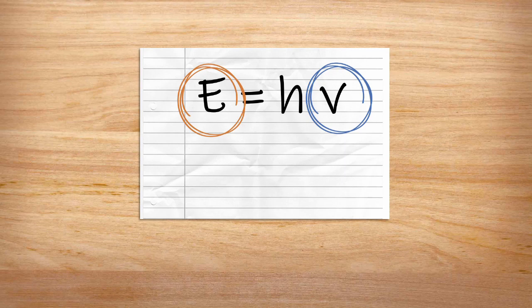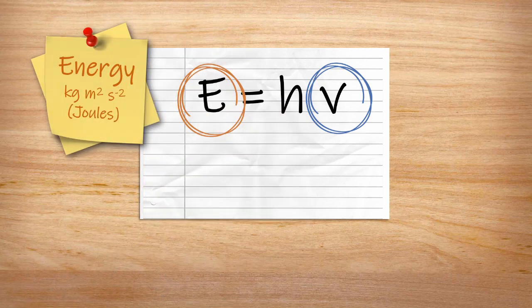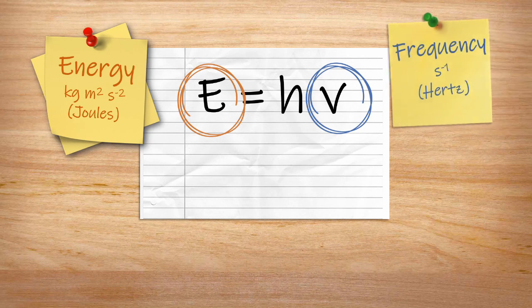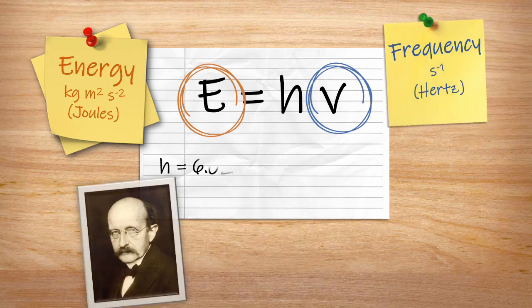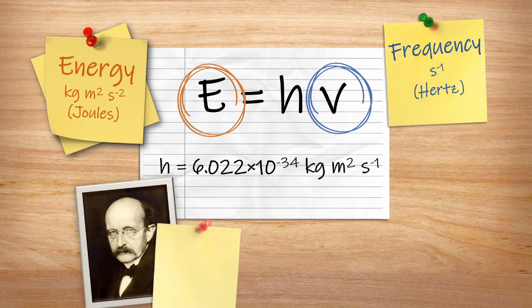This equation relates energy E to frequency ν, and the proportionality constant between them is h — Planck's constant — named after Max Planck, who first proposed that energy is quantised and related to frequency this way. This equation tells us the energy of a photon of light.